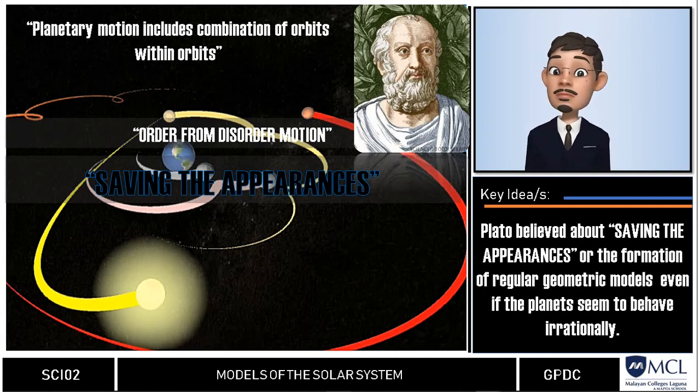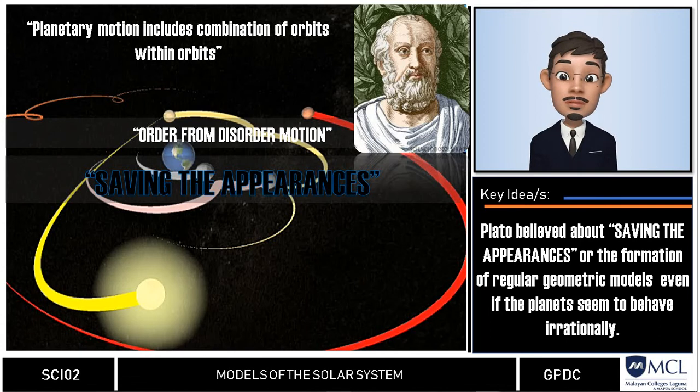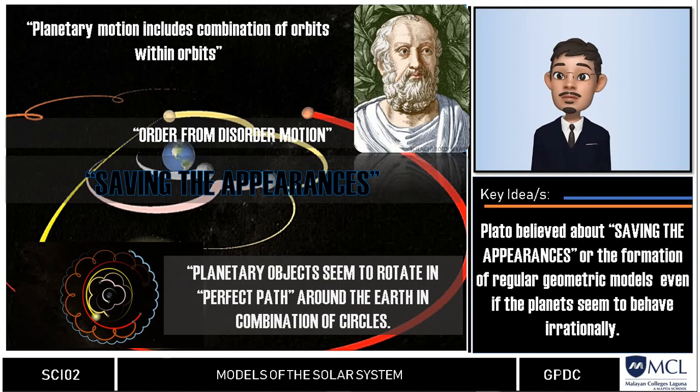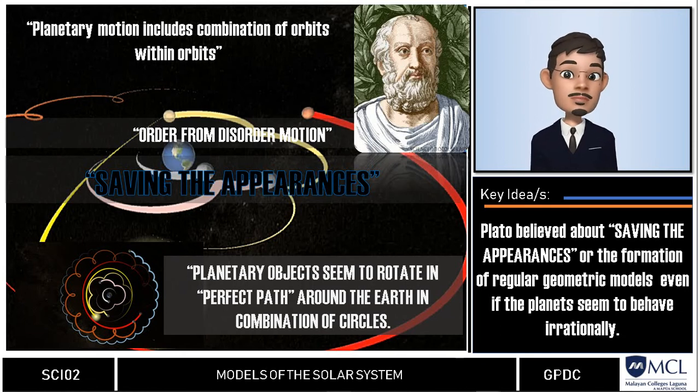But how did Plato come with such remarkable ideas? Through his observations he explained thoroughly that the stars seem to rotate around the earth in perfect path. However, he also mentioned the presence of wandering stars or the stars that travel across the sky.